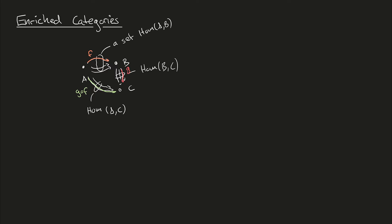In other words there's a function of hom sets - we call this function composition. For this particular example it goes from the hom set of b and c cross the hom set of a and b to the hom set of a and c. This function takes some element g in hom(b,c) and some element f in hom(a,b) and maps it to its composite, g after f.